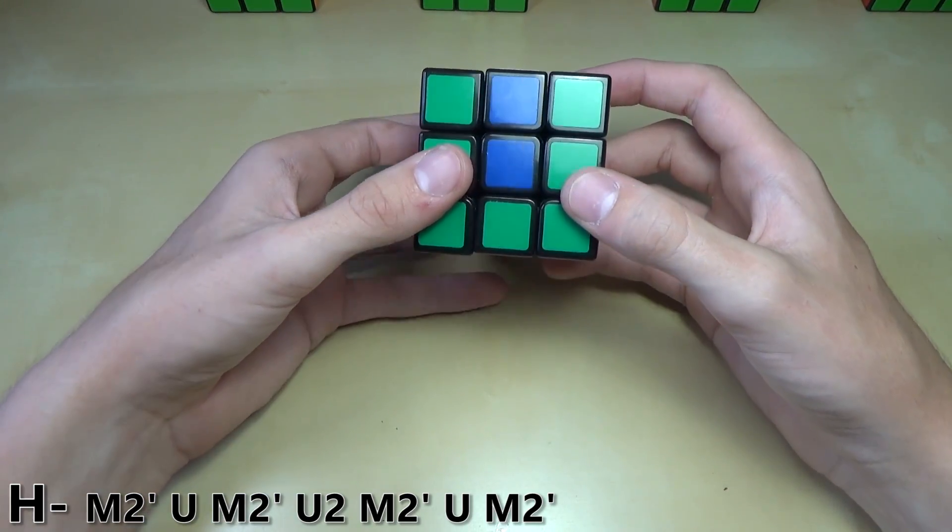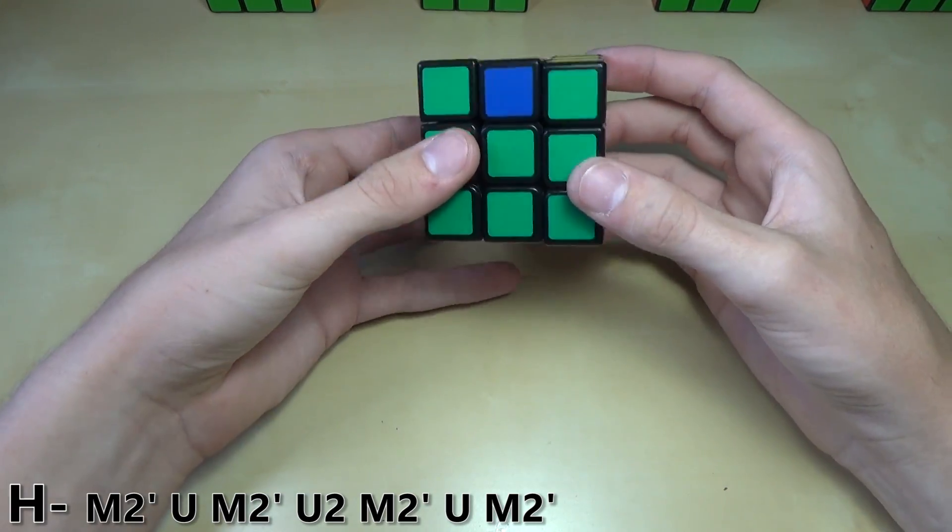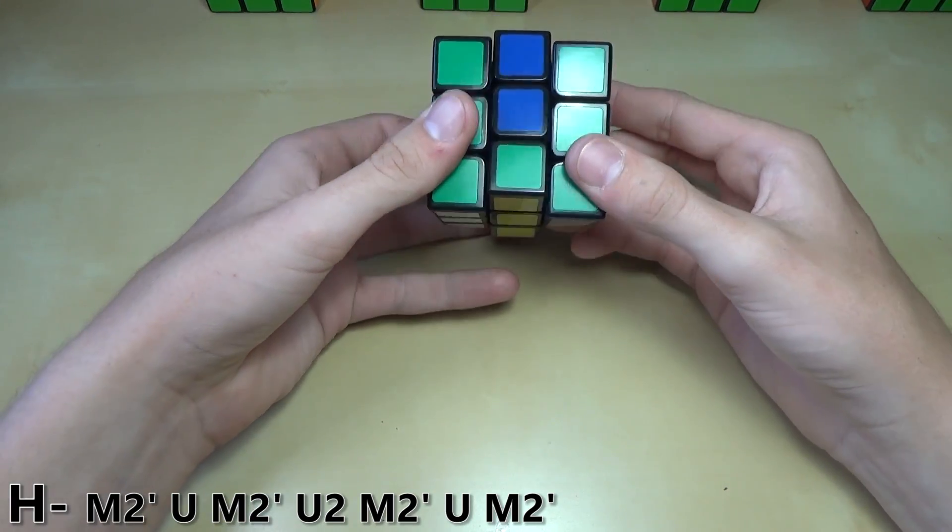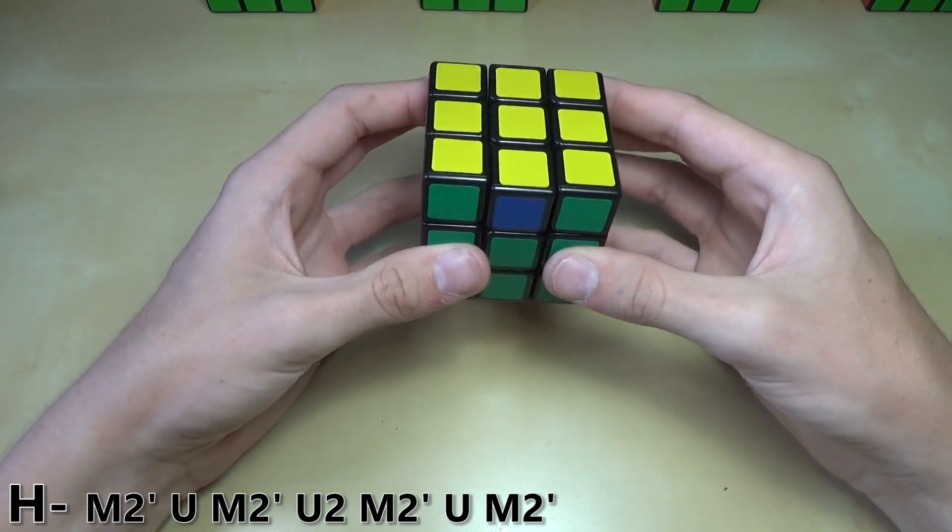The way I originally did it is I just did like this with my ring finger twice, but there's a lot better ways of doing it, like doing ring finger then middle finger, which is how I do it now. So the actual algorithm is like this.